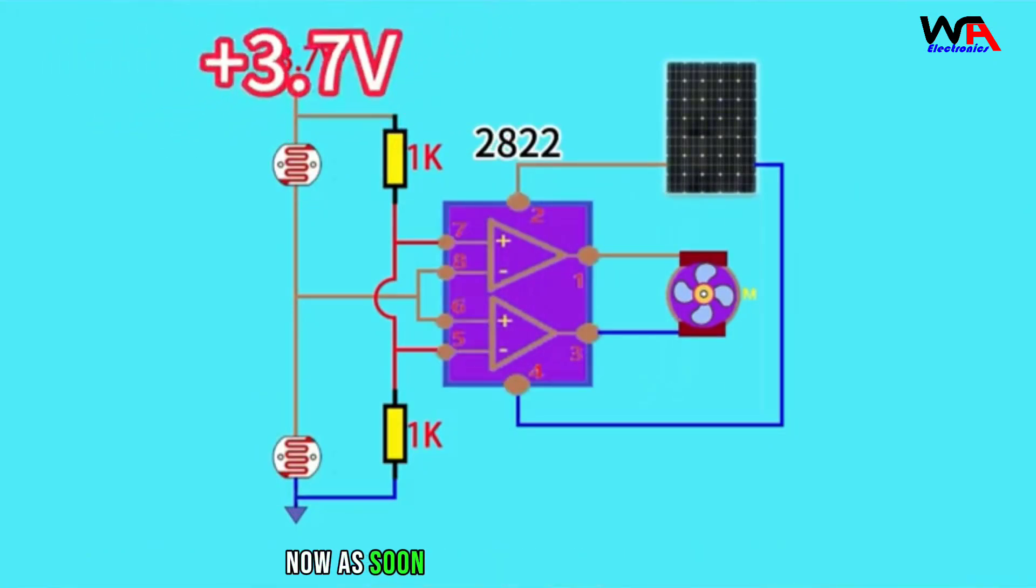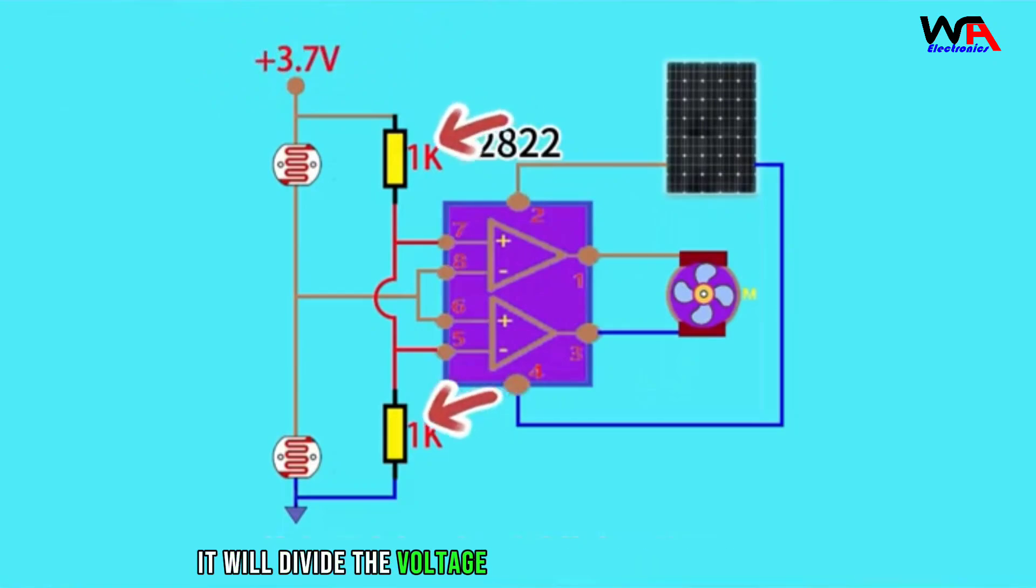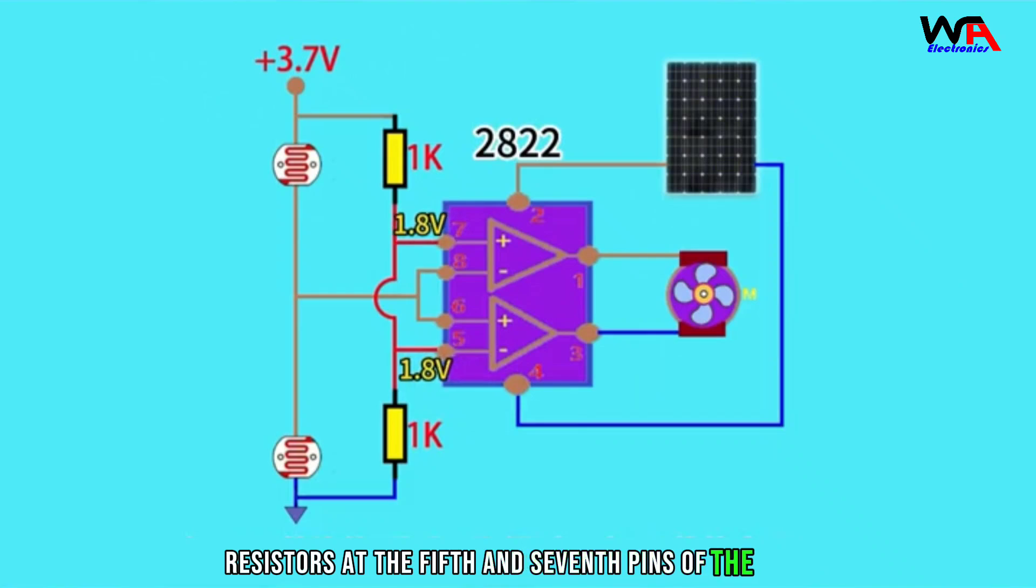Now, as soon as the circuit is powered on, it will divide the voltage through these two 1,000-ohm resistors at the 5th and 7th pins of the 2822 chip to get a voltage of 1.8 volts.